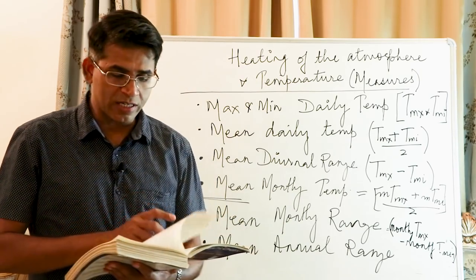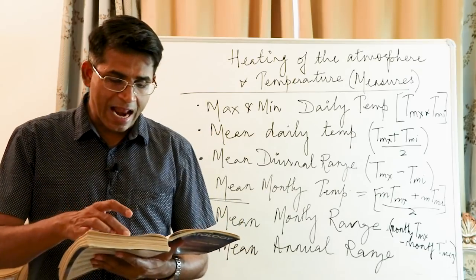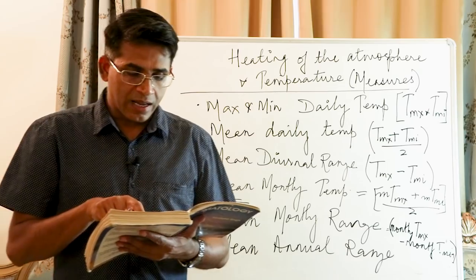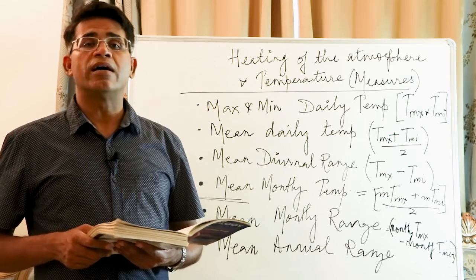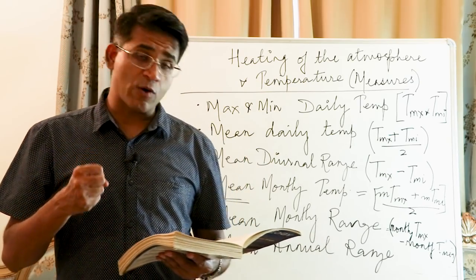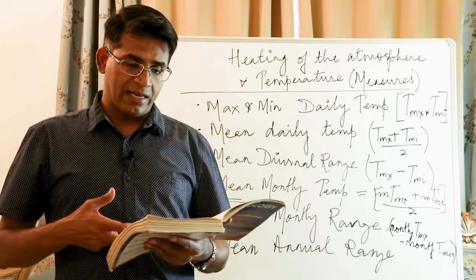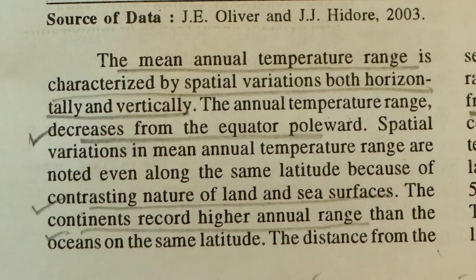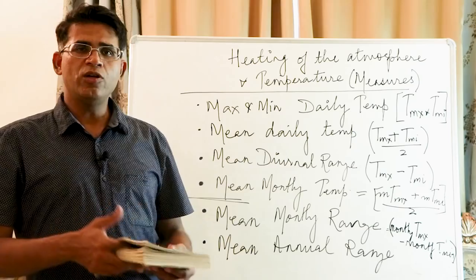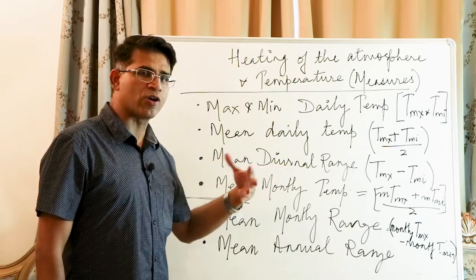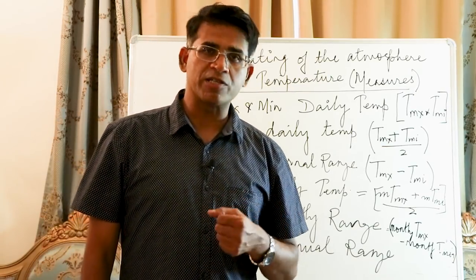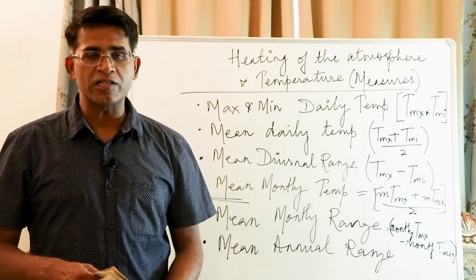Page 59 covers the annual range of temperature — the difference between the highest and lowest temperature — and reiterates that there is no coincidence between when the earth receives maximum insolation and when temperatures are maximum. Page 59, first column, last paragraph, again discusses latitudinal patterns of temperature measures across the globe.